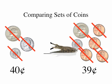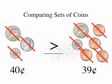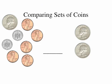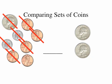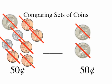Don't forget, to help you, the alligator always eats the greater number. Let's try it again, starting with the greatest value coin first. 25, 35, 45, 46, 47, 48, 49, and 50. The first set of coins equals 50 cents. Let's look at the next set. 25 and 25 is also 50 cents. 50 cents and 50 cents are the same, so we compare by using the equal sign.